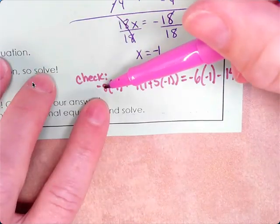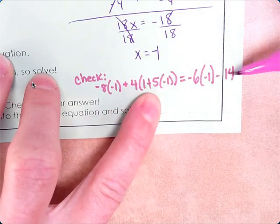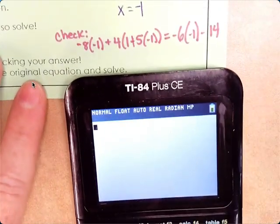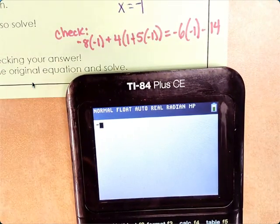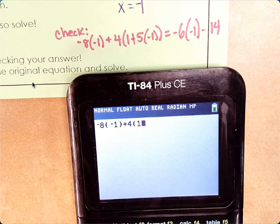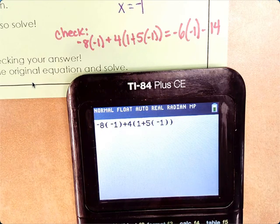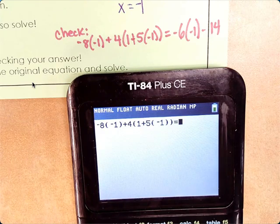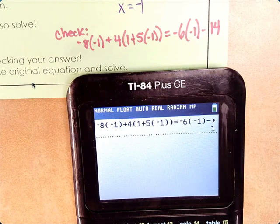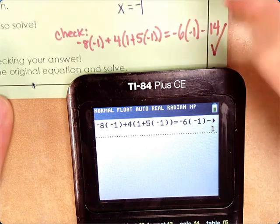Hopefully, so it would be negative 8 times the x plus 4 times 1 plus 5 times the x equals negative 6 times the x minus 14. And so we put this in exactly as it appears. If it comes out to equal 1, then that means it's true. If it's 0, it's false. Yes. So the one means it is true. So we can put a little check mark showing that we checked it.